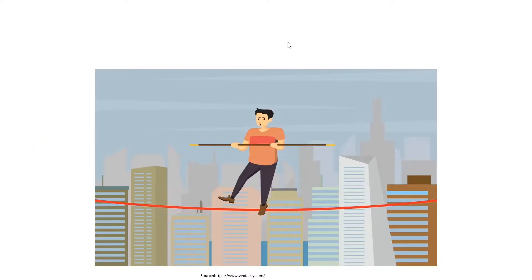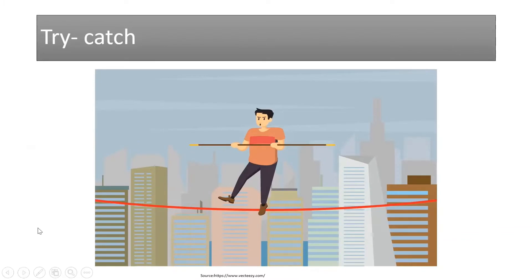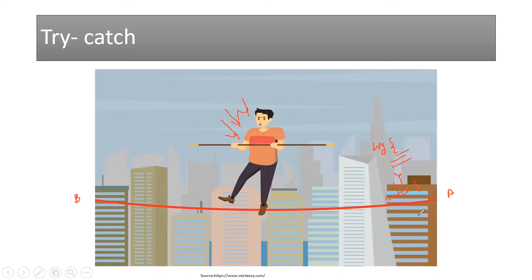If you've understood this concept, you've pretty much understood what we're going to learn today — which is nothing but try and catch. Just like how we're trying to walk from building A to building B, there could be things that might go wrong. We might not be sure what could go wrong — you might lose balance, slip, or a heavy wind might push you down. Similarly, when you try writing some code, you put it in a try block and tell the system that if anything goes wrong, catch the exception being thrown.